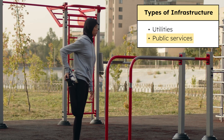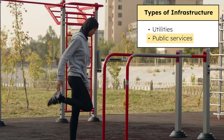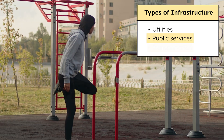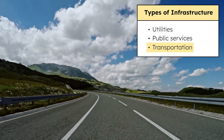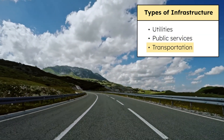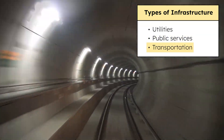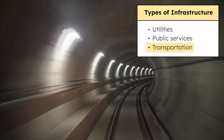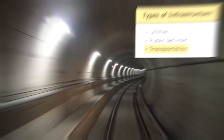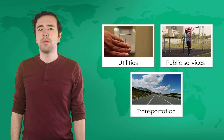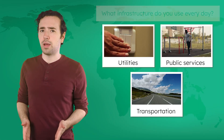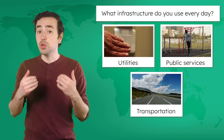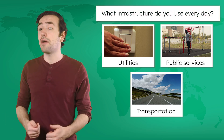Public services include hospitals, parks, affordable housing, and waste management. And transportation infrastructure like roads, bridges, subways, and bike lanes all connect people to these services. Think about a typical day in your life — what infrastructure do you use every day?